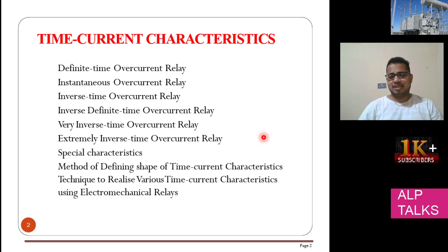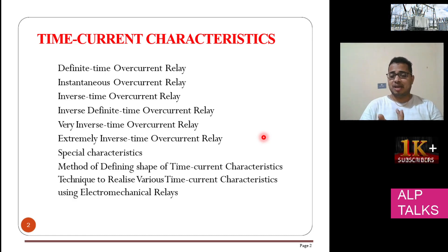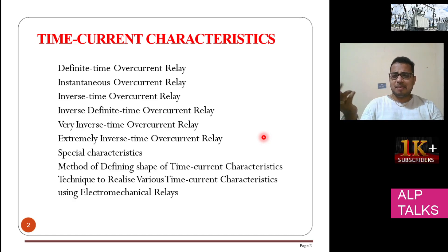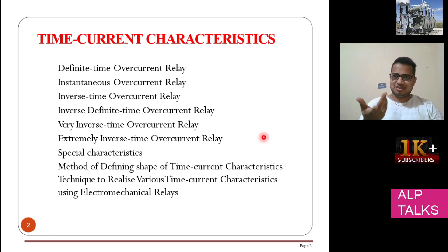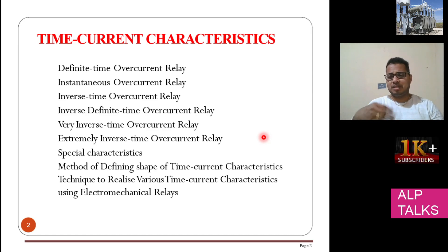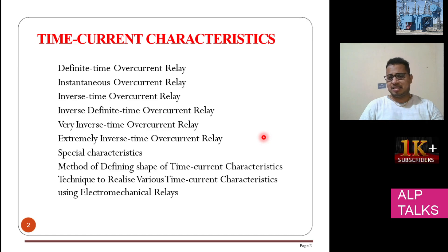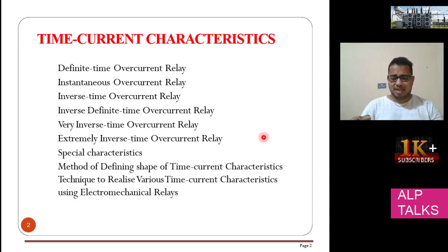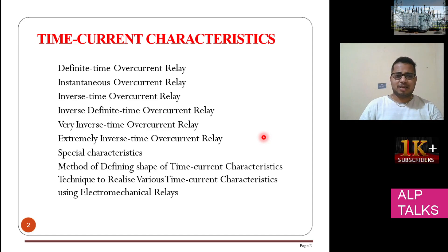There are certain things we have to consider in the overcurrent relay. For example, overcurrent means: say 100 amps is the normal current and 120 amps is flowing — then how long is that 120 amps flowing? For one or two seconds it may be okay, but if it persists for more than 10 seconds, then it is not okay. So there are time-related characteristics — time and current characteristics. One second is okay, two seconds is okay, but 10 or 20 seconds is not okay. So the operation is time-dependent — that is the time and current characteristic.